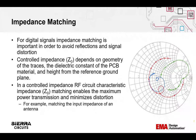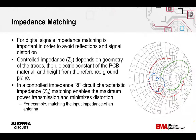Proper impedance matching helps minimize signal reflections, maximize power transfer, and optimize system performance. Characteristic impedance, written as Z0, refers to the inherent impedance of a transmission line — the impedance seen by a signal propagating along it — and is determined by physical dimensions and properties like its width, thickness, dielectric materials, and relative permittivity of the substrate material.